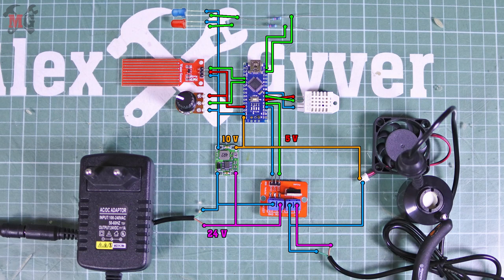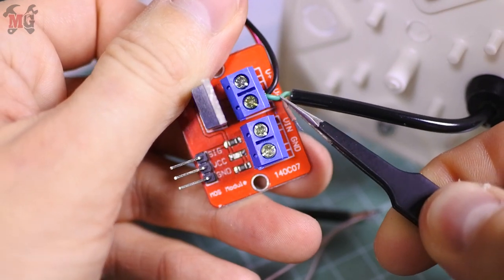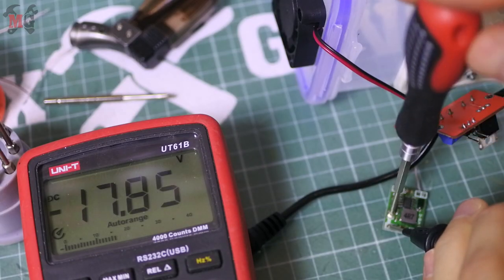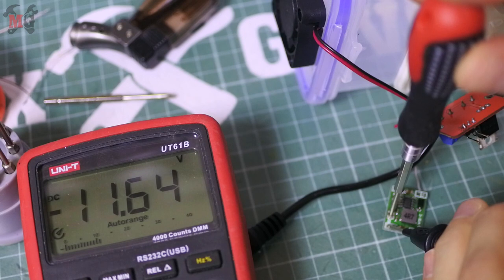We will start to assemble the electronics according to the schematic. Look at it again, while you can also download the picture on the project page. The link is in the description below. A small feature of the circuit is that the transistor controls both 12 and 24 volt voltage simultaneously.